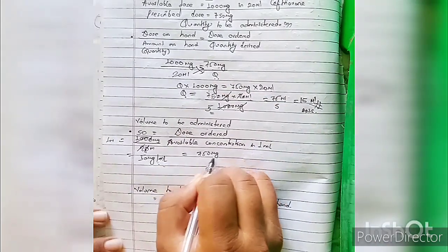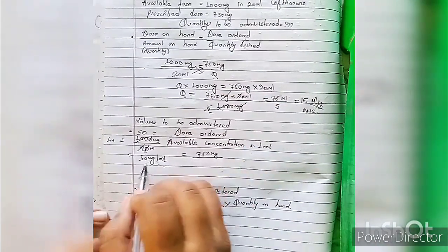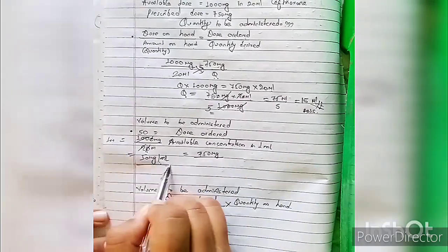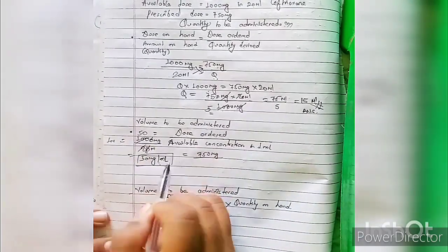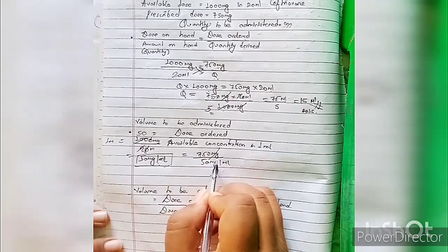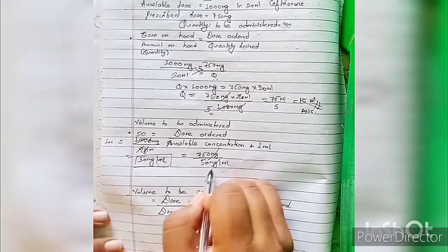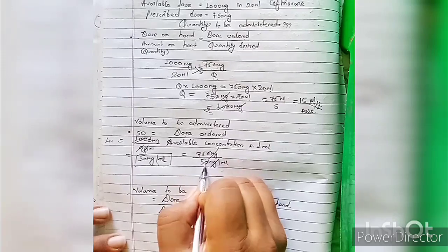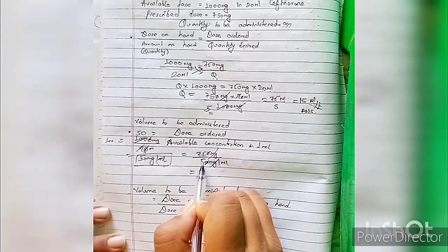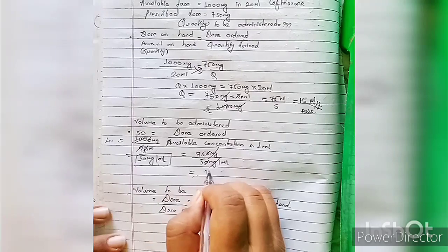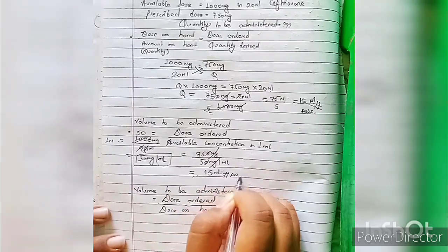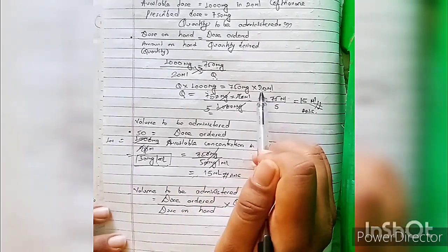Dose order is 750 mg divided by available concentration of 50 mg per mL. mg cancels out, zeros cancel: 75 divided by 5 equals 15 mL. The answer is the same — both formulas give 15 mL. Even though the formula looks different, it is the same.